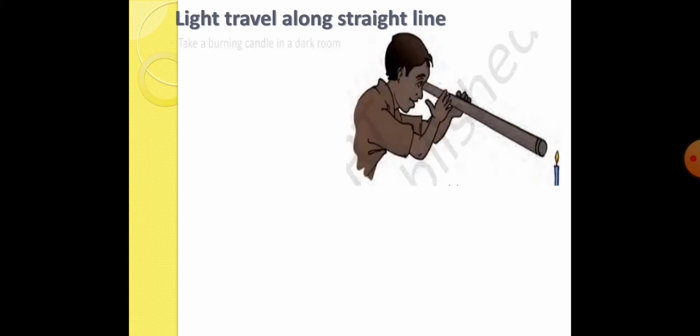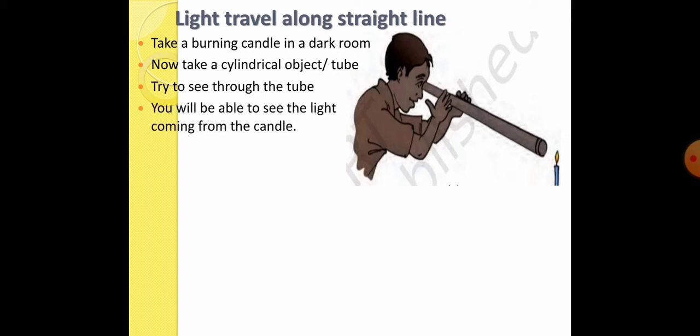Okay, take a burning candle in a dark room. Now, take a cylindrical object or tube. Next, try to see through the tube. As it is mentioned here, you can take the straight tube like this and you can see through the tube. Now, what you will get? You will be able to see the light coming from the candle.